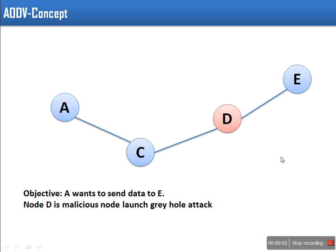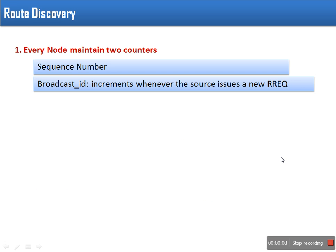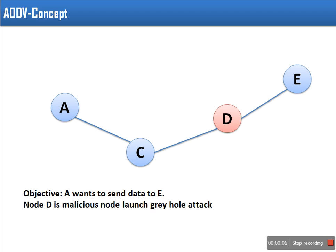Hello friends. In this video I will explain gray hole attack in AODV routing protocol. AODV routing protocol is a reactive routing protocol, which means at the time of data sending it will search a path for the destination.